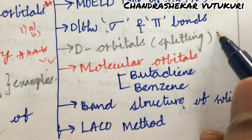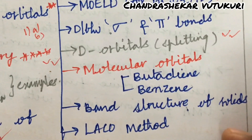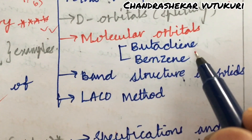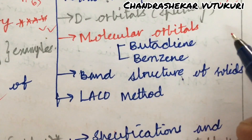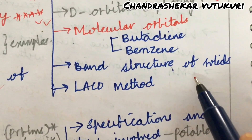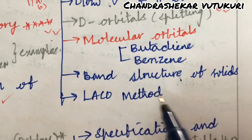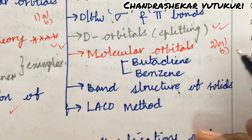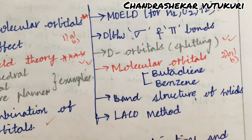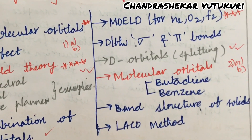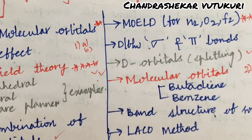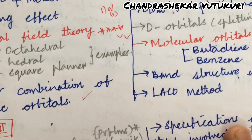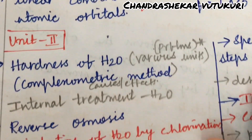d-orbitals along with the splitting is a very important question. Molecular orbitals related to butadiene as well as benzene, and the band structure of solids and the LCAO method — from this part we can expect 2-A as well as 2-B. Dear students, make sure to work out your paper very neatly. I have uploaded a paper on how to write a theory paper; please go through it and score out of full mark. You are not going to get this chance again.